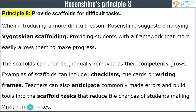Before I give you any clear example of how I've applied this principle into my classroom, let's have a look at what Rosenshine suggests. The principle is to provide scaffold for difficult tasks. Rosenshine suggests that you provide the student with a framework that makes it easier for them to make progress. This scaffold could take different forms — it could be a checklist, cue cards, writing frames, or any support or help sheets that you create or provide to students. The crucial part is to make sure that all scaffold tasks are removed gradually so students can access the work independently.